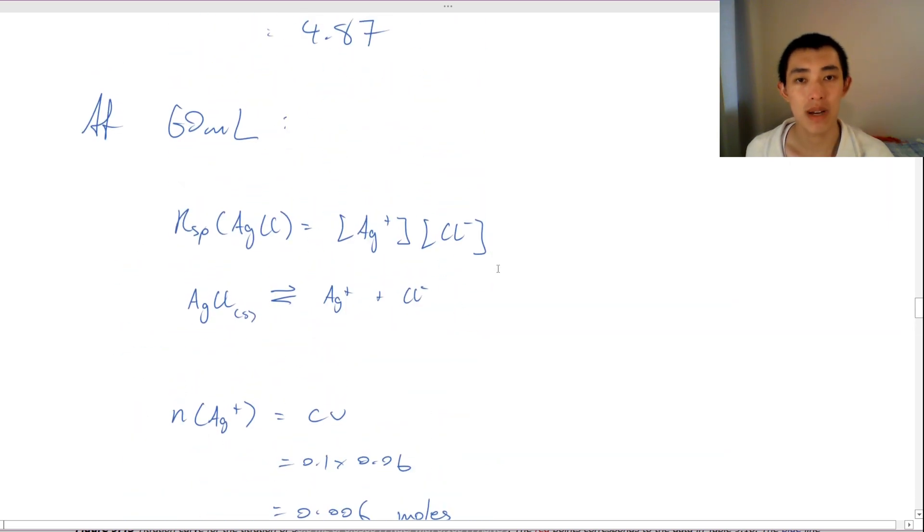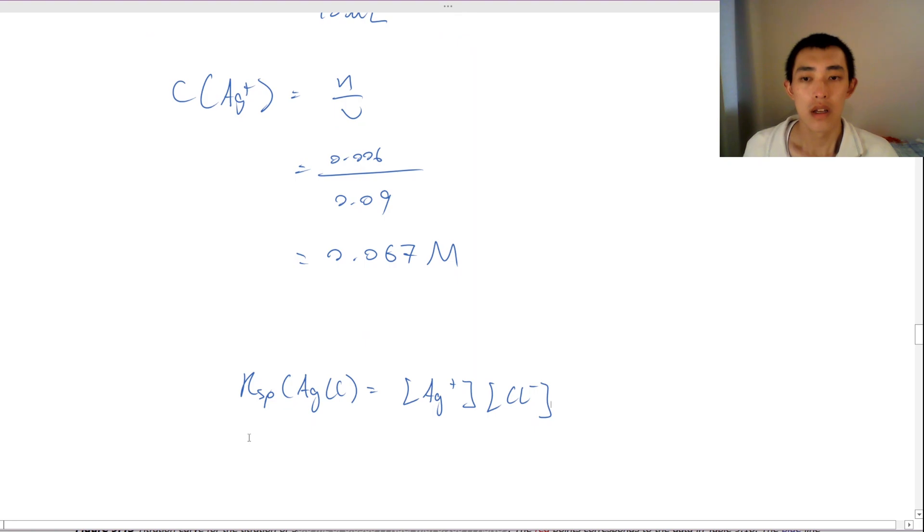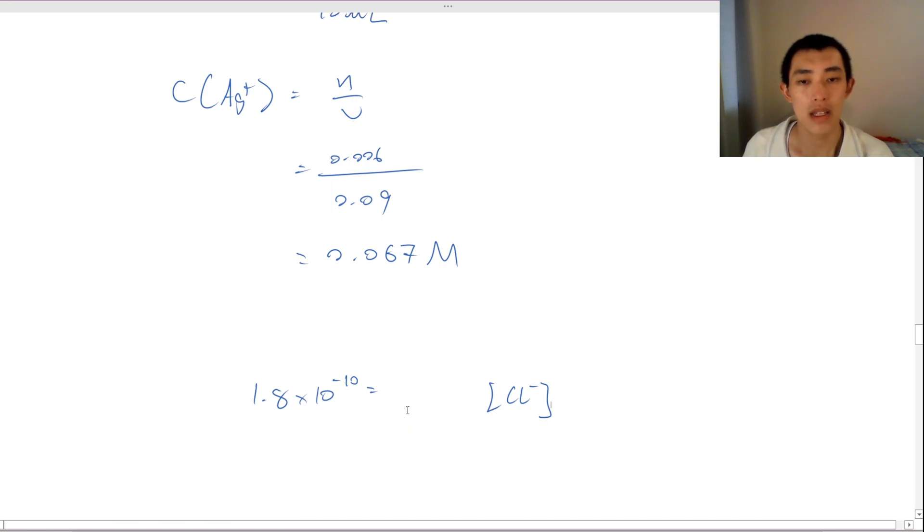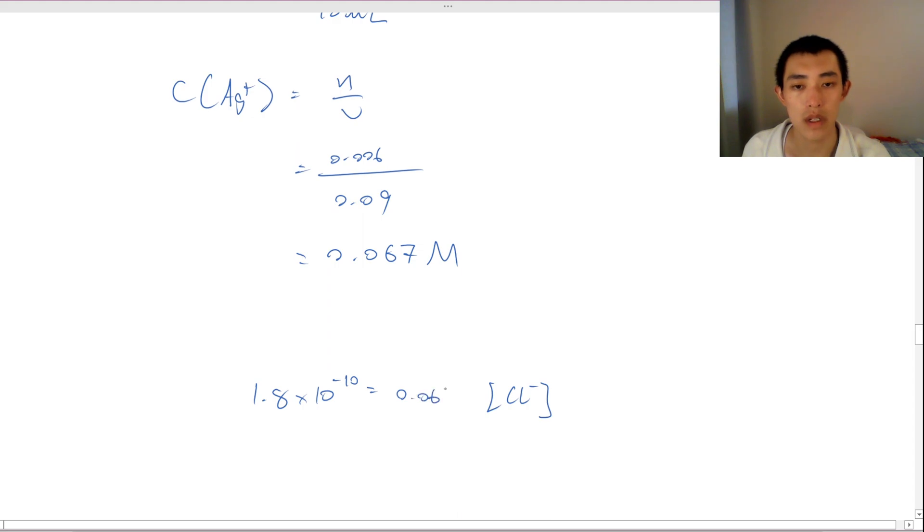Now, let me sub this back into my KSP equation. This number is 1.8 times 10 to the power of negative 9, I hope. Let me check that. No, it's 10. I can't remember. Bad memory.